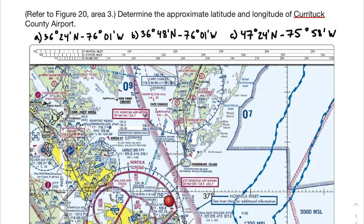In this video we're going to be going over one of the Part 107 questions that you might see on your test, this one having to do with latitude and longitude on sectional charts. In this problem, we're asked to refer to a figure and determine the approximate latitude and longitude of Currituck County Airport. Just like with all the other questions for Part 107 tests, we're given three options as a multiple choice question.